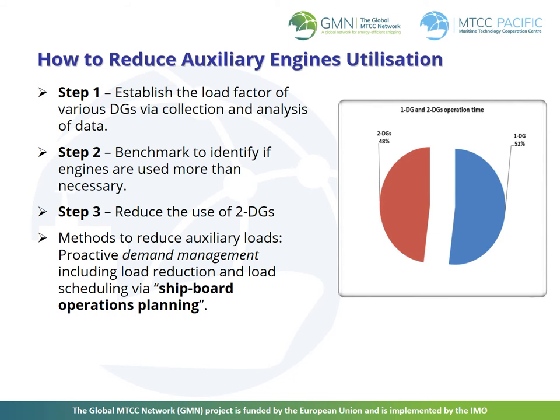In order to evaluate the prevailing practices on the use of auxiliary engines, the following steps need to be taken. Step one: establish the load factor of various diesel generators through the collection and analysis of data. Step two: benchmark to identify if engines are used more than is necessary. Step three: reduce the use of two diesel generators. Methods to reduce auxiliary loads include proactive demand management, including load reduction and load scheduling through shipboard operations planning.